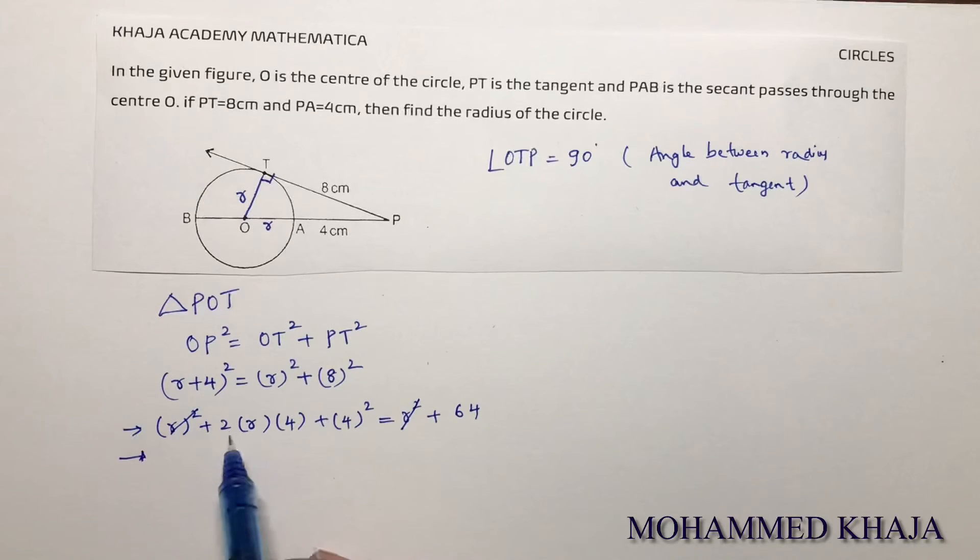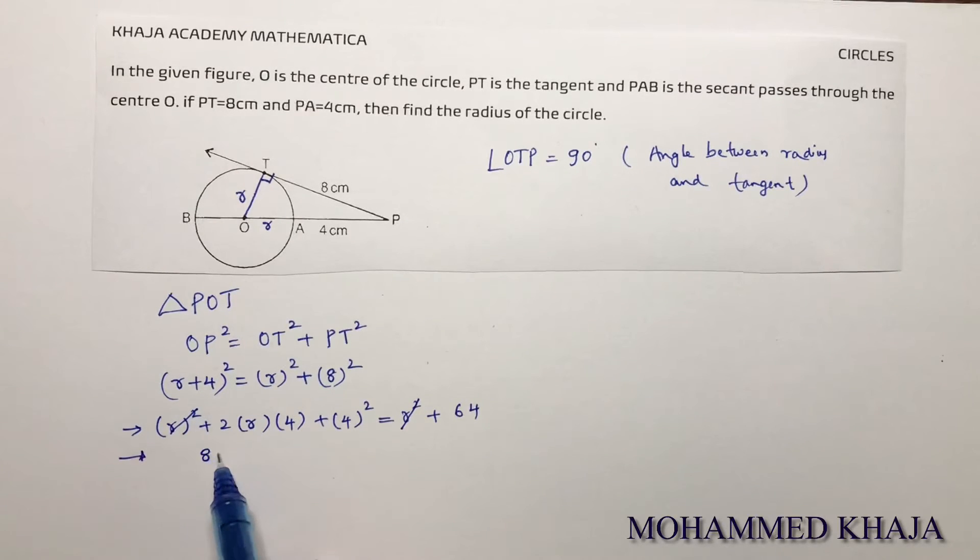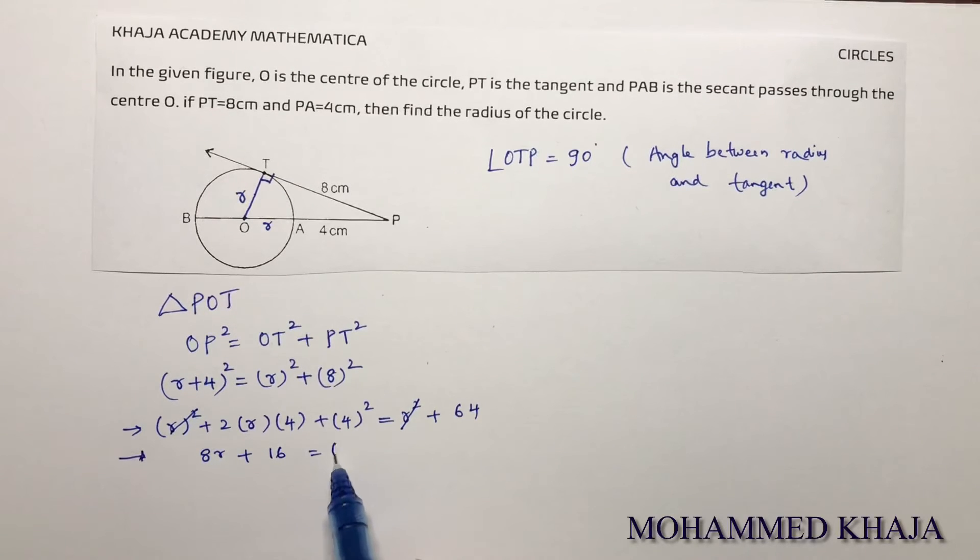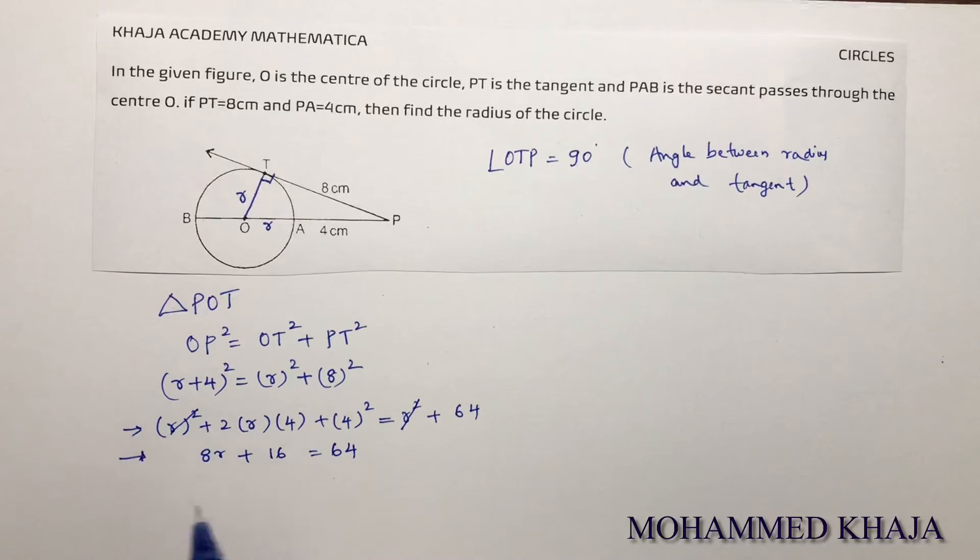You're left with 2 times 4, which is 8R plus 4² which is 16 equals 64. So 8R equals 64 minus 16.